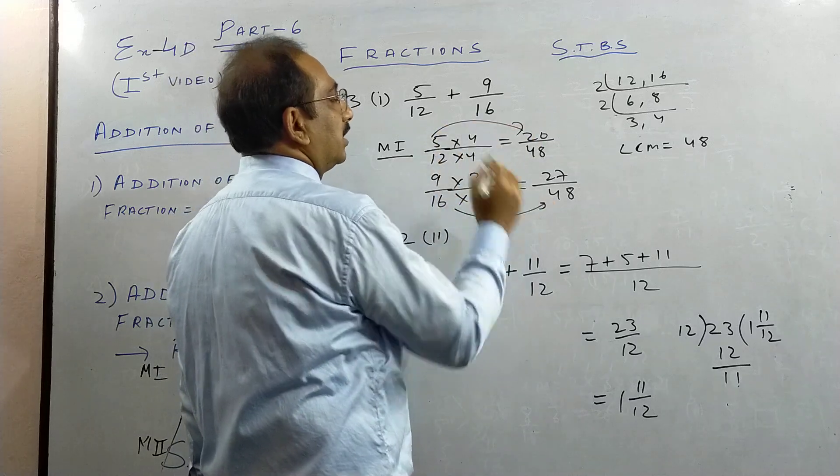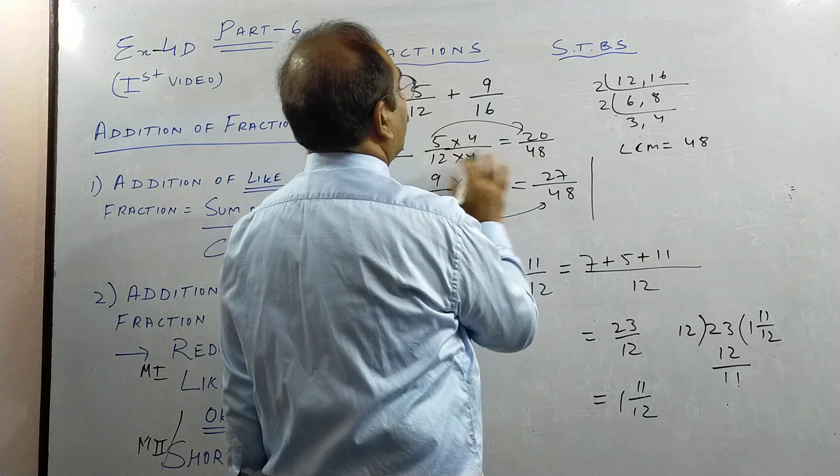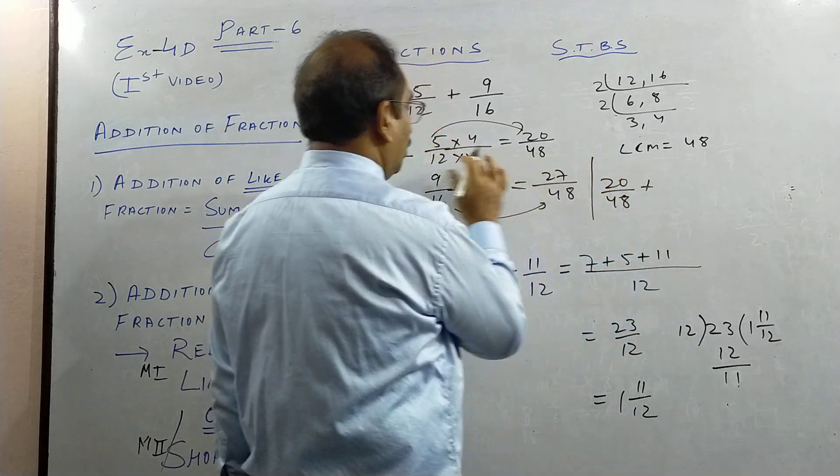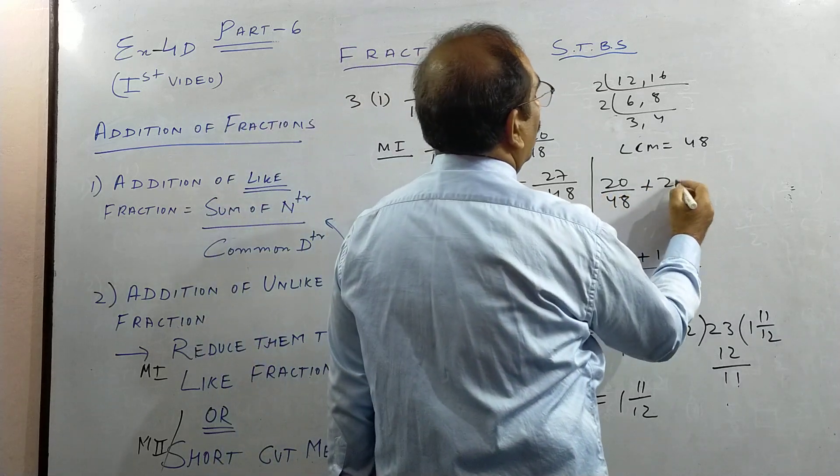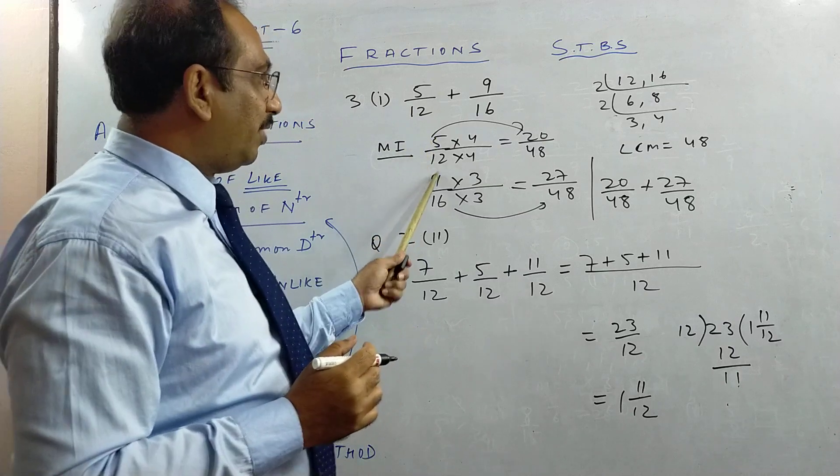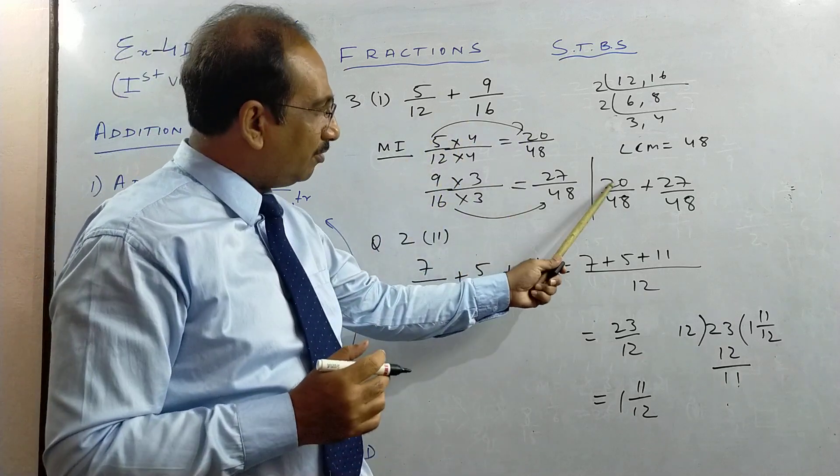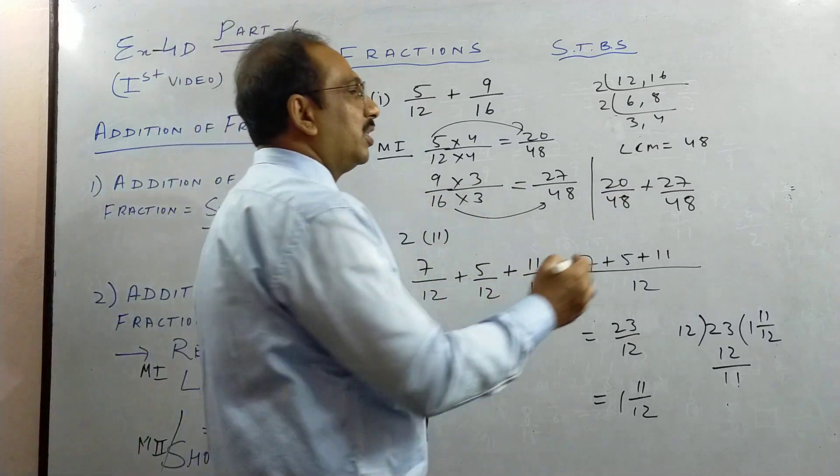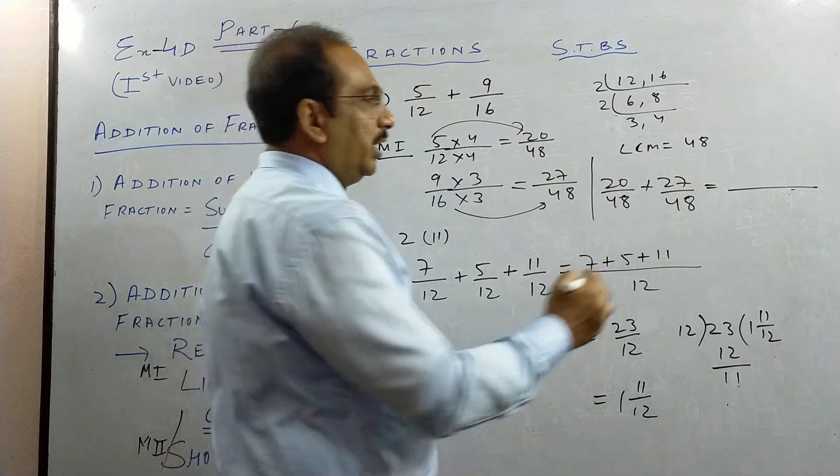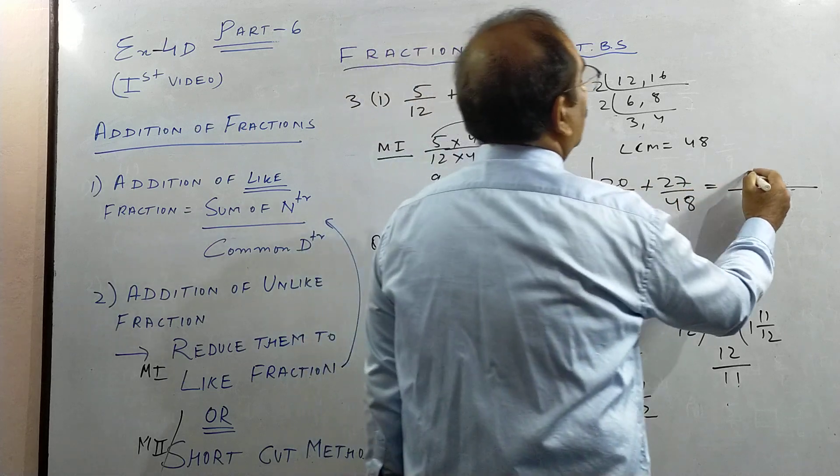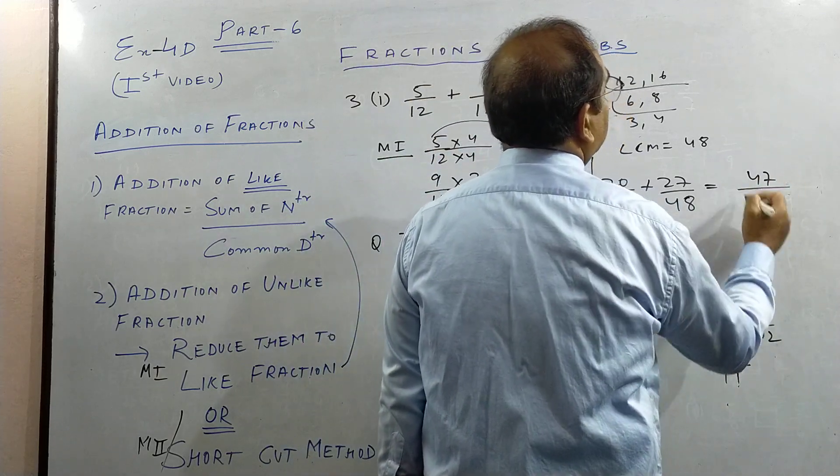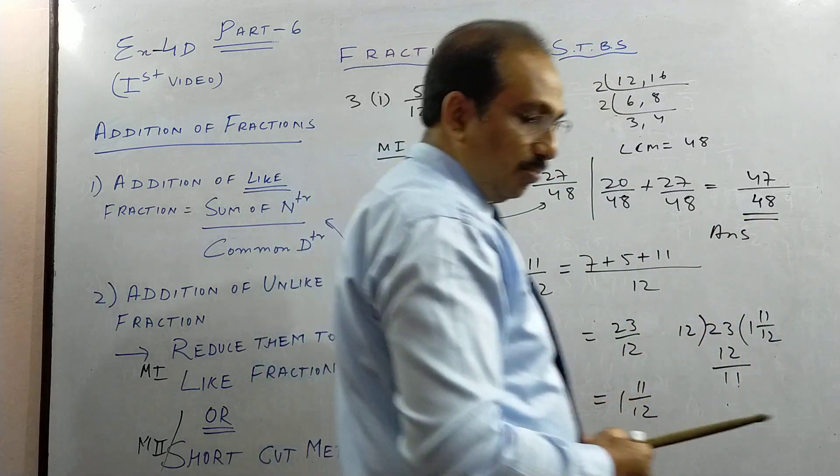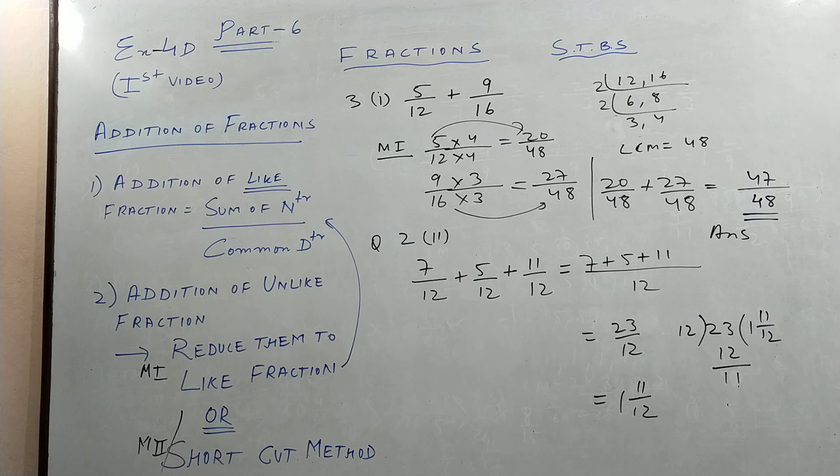So 5 times 4 is 20. And 9 by 16, how will you make 48? 16 times 3 is 48. 9 times 3 is 27. Now I have converted them into like fractions. In place of adding 5 by 12, I will write 20 by 48 because 5 by 12 is equivalent to 20 by 48. In place of 9 by 16, you write 27 by 48. Now we go to rule number 1: common denominator, write the denominator and add the numerator. So here we have common denominator, add the numerator, and this children is a proper fraction. So kindly pause the video and copy 3 part 1.